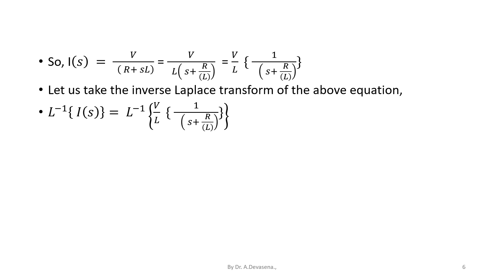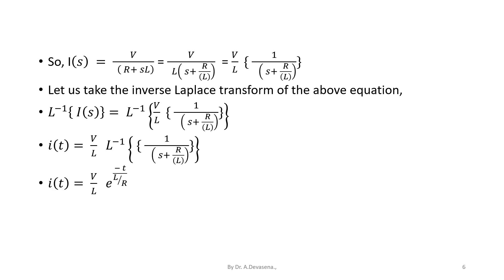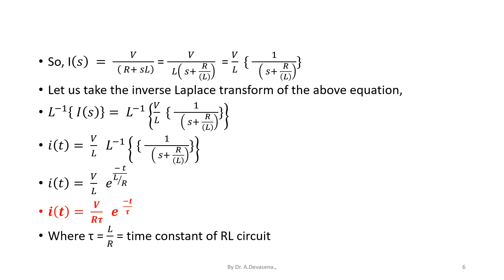Taking the inverse Laplace transform: Laplace inverse of I of S is equal to Laplace inverse of V by L into 1 divided by S plus R by L. That is I of T is equal to V by L into e power minus T divided by L by R. Therefore I of T is equal to V by R into tau into e power minus T by tau, where tau is equal to L by R, that is the time constant of the RL circuit.